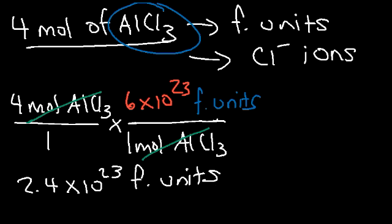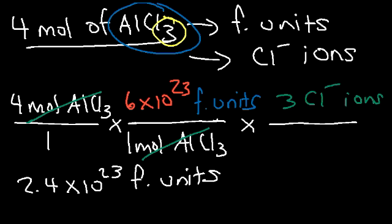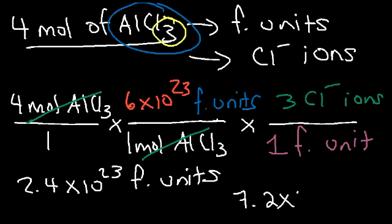Now to find the number of chloride ions: there are three chloride ions per one formula unit of AlCl3. So 2.4 times 3 equals 7.2, giving us 7.2 times 10 to the 23 chloride ions. Sometimes you just need to take it an extra step further.